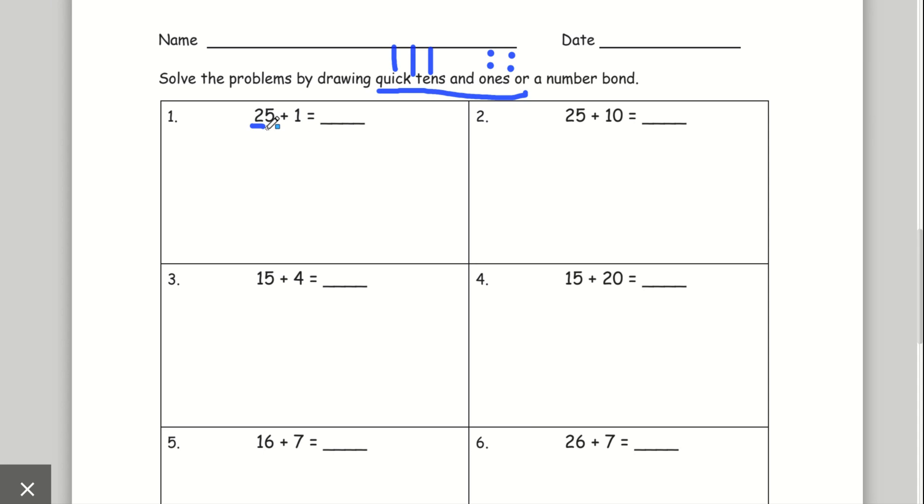So let's see. 25, that means I have two tens and five ones. One, two, three, four, five.